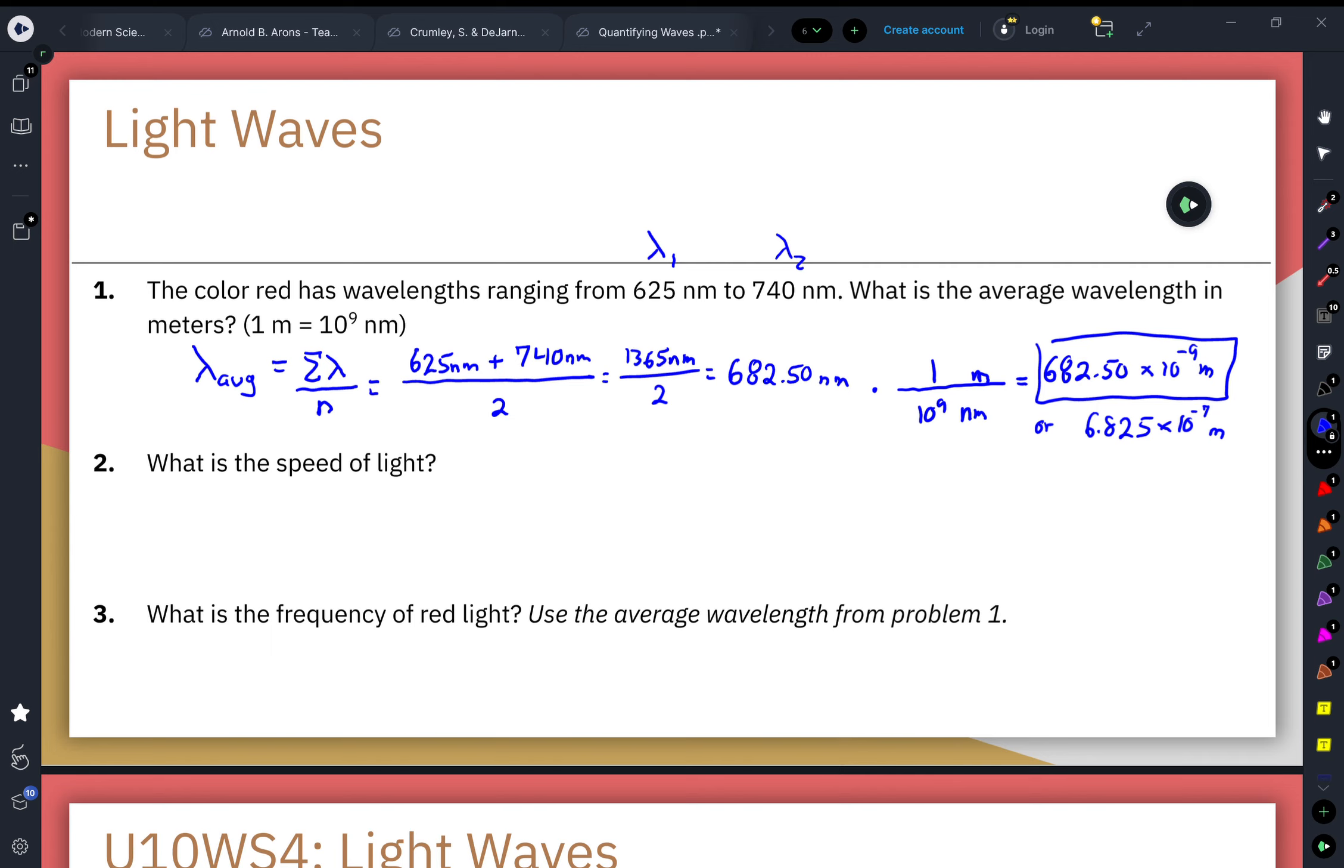So question two: what is the speed of light? The speed of every electromagnetic wave in a vacuum is the same. We represent it with the letter c, and it is 3.00 times 10 to the eighth power meters per second. That speed changes depending on particles present, but for the most part we're just going to make the assumption that it's 3 times 10 to the eighth power meters per second.